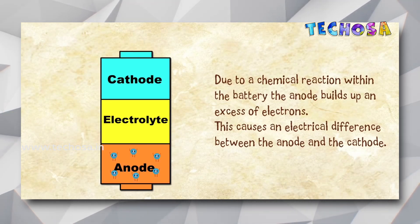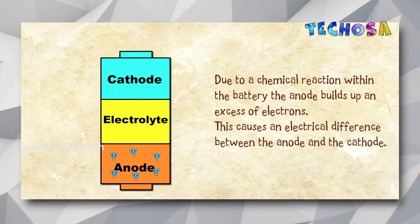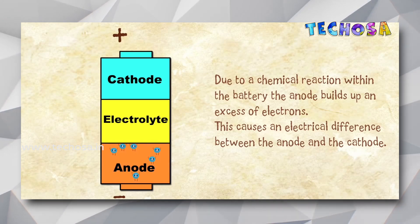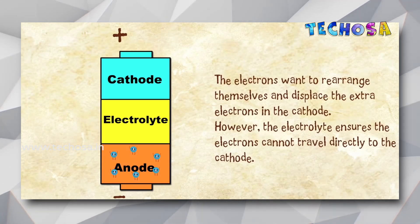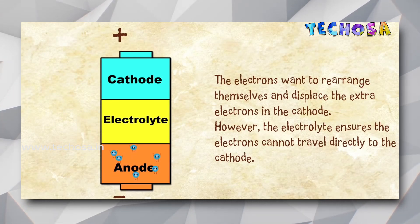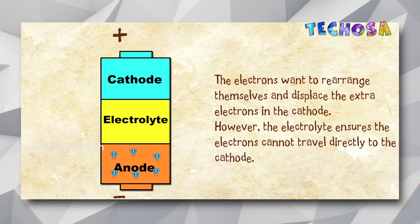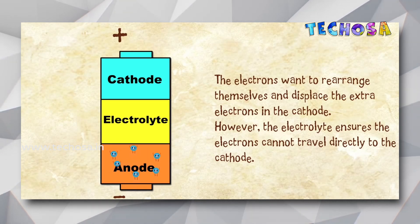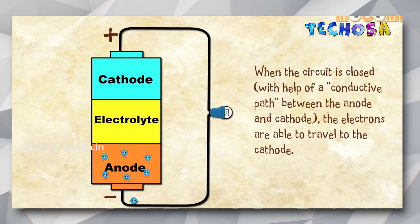Due to the chemical reactions within the battery, the anode builds up an excess of electrons. This causes an electrical difference or potential difference between the anode and cathode. This difference is the voltage of the battery. The electrons want to go to the cathode since they are attracted to the positive cathode, but the electrolyte prevents the electrons from doing so. If we make a circuit with the help of a wire and a bulb, the electrons will flow from the anode to the cathode.